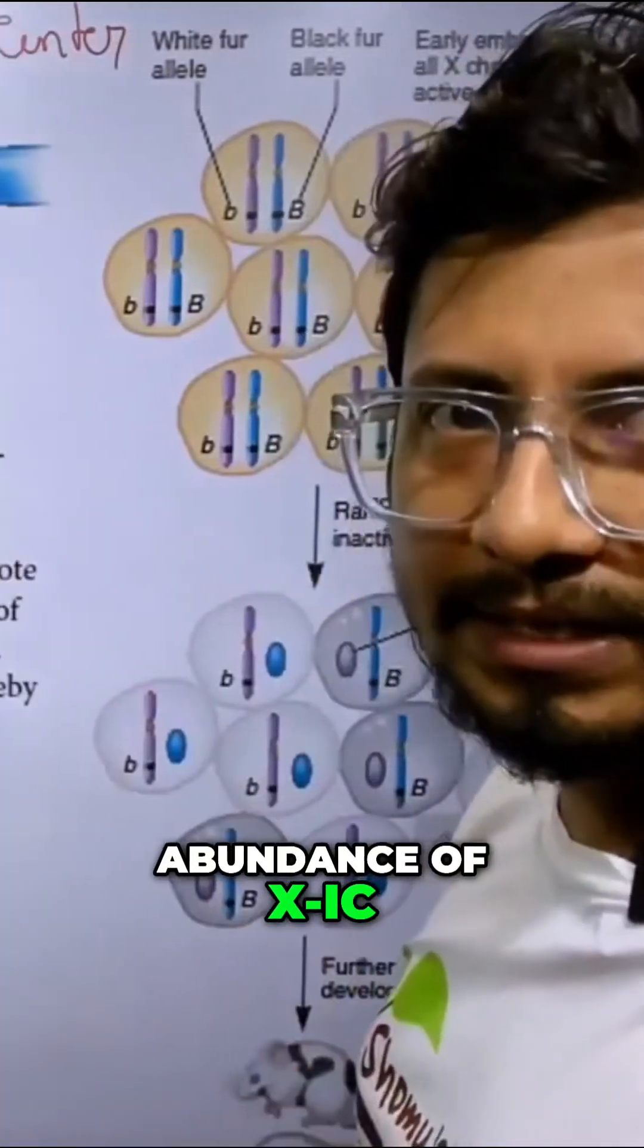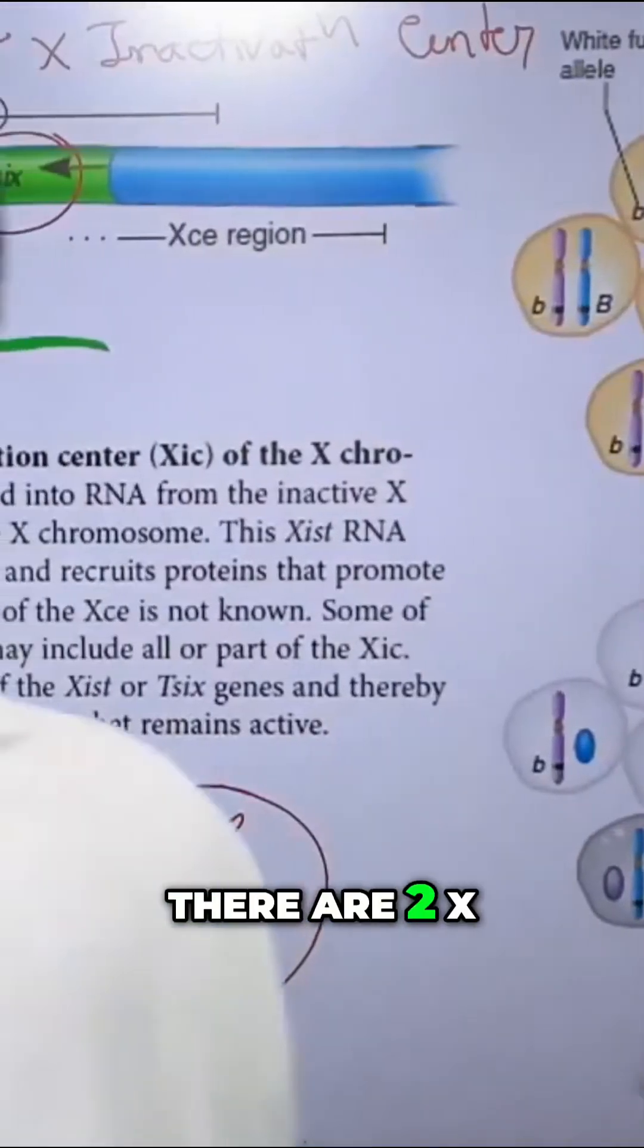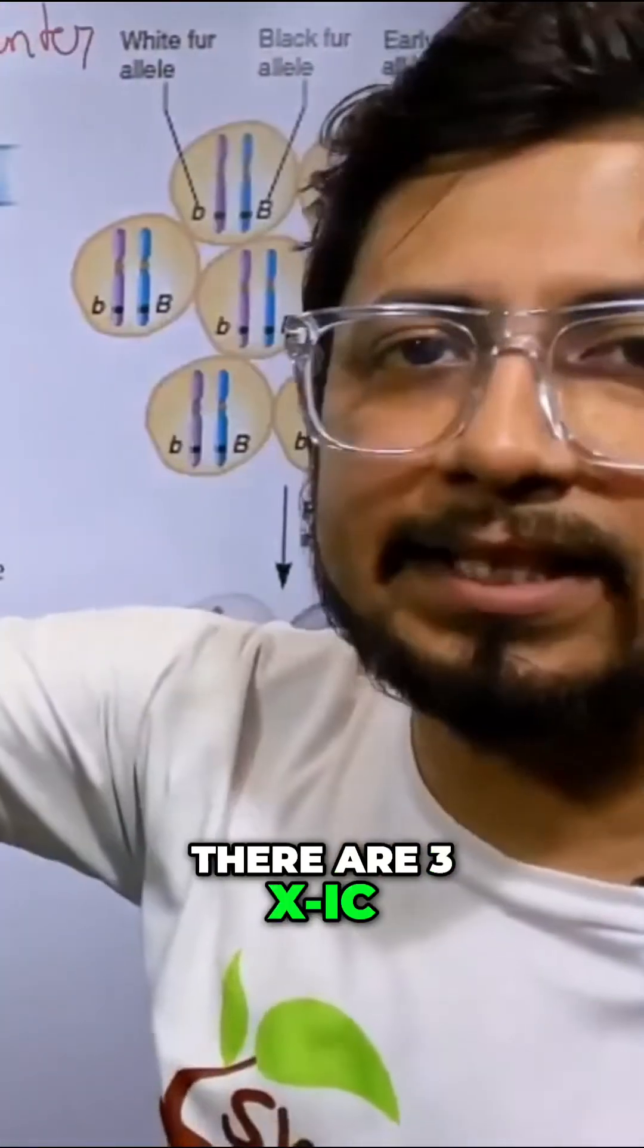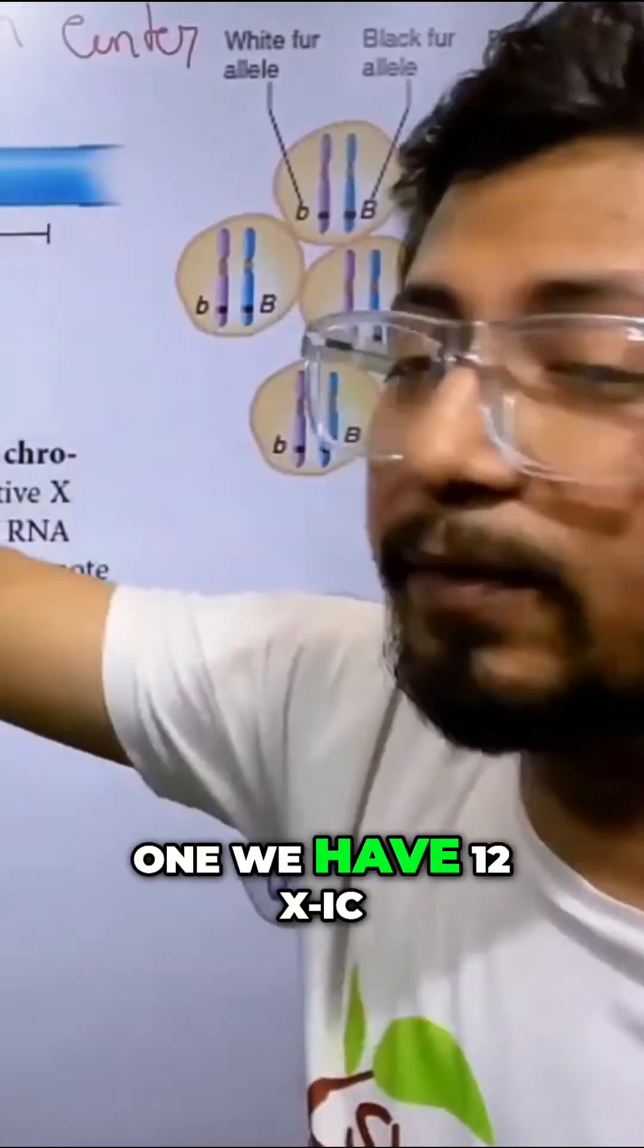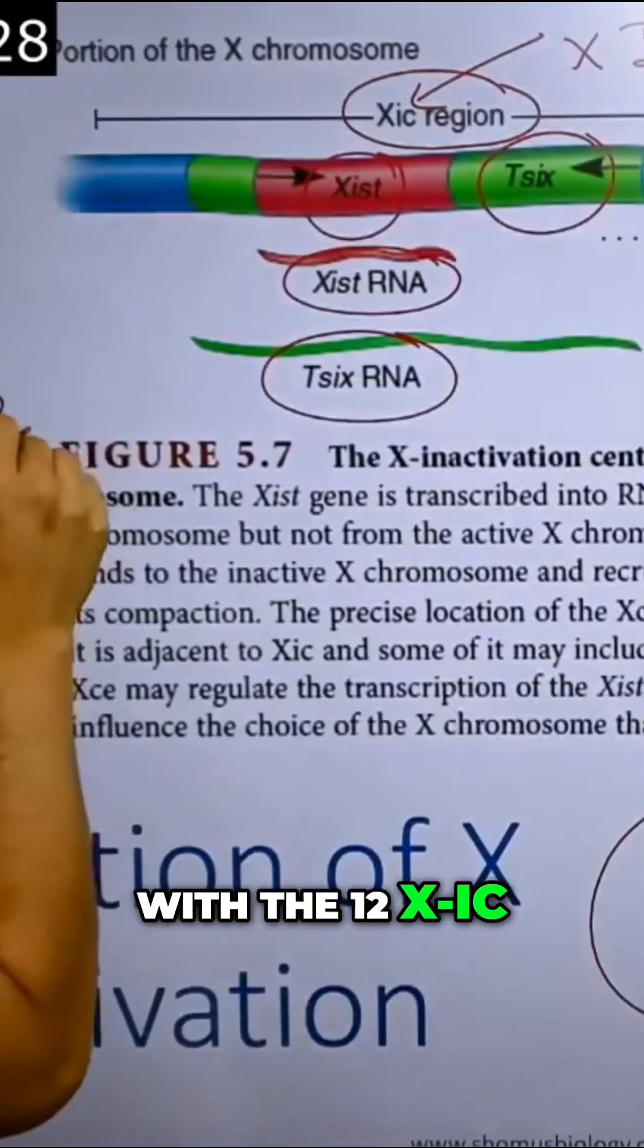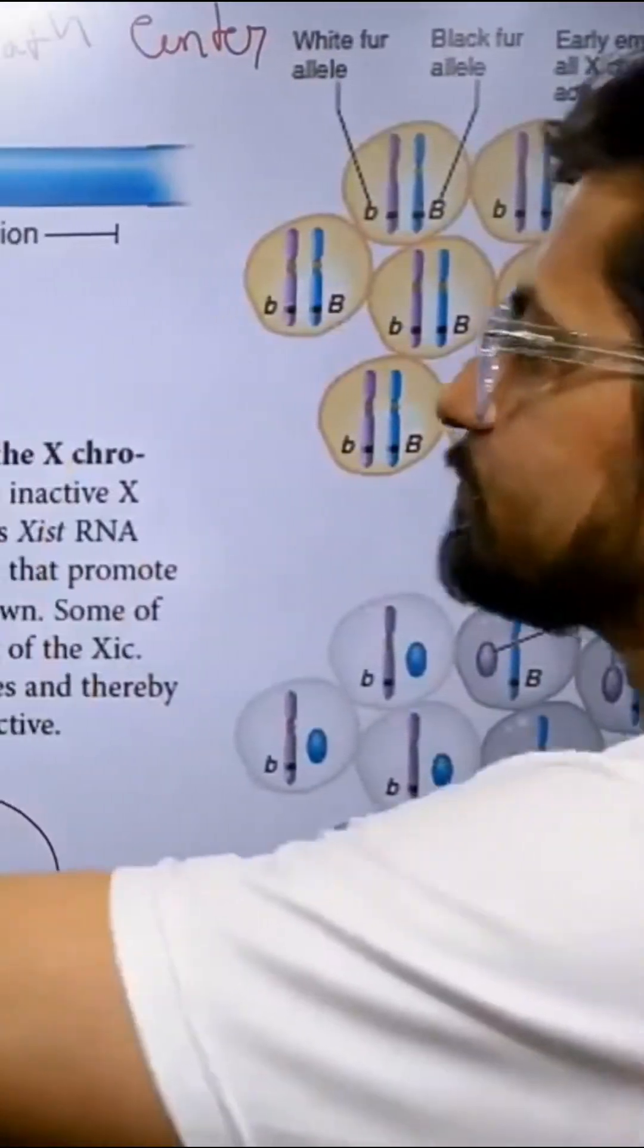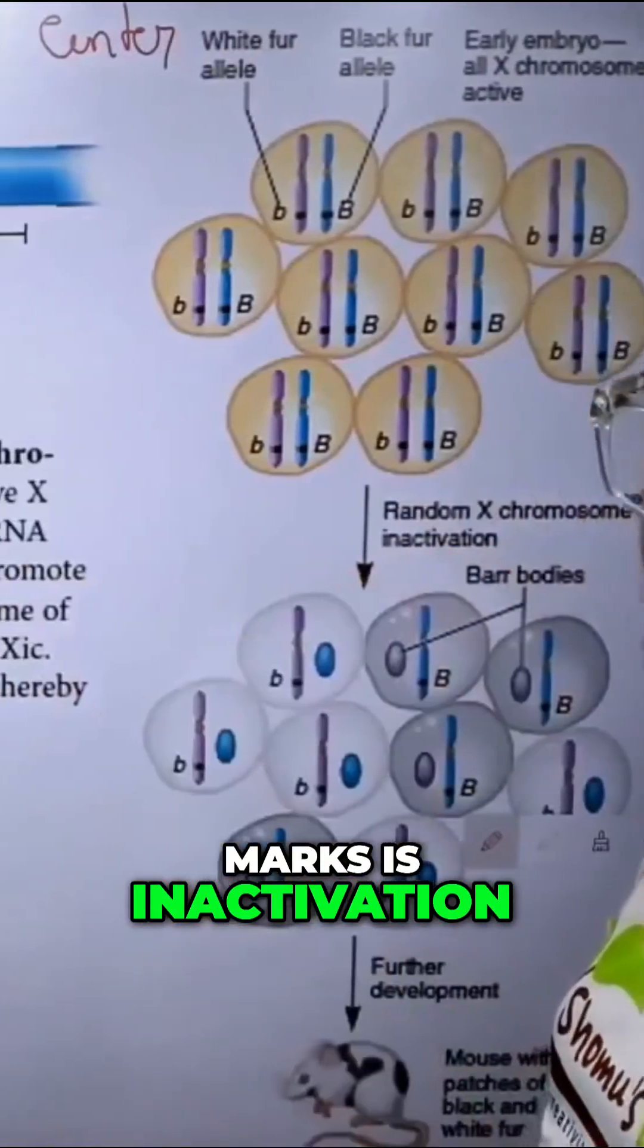Let us say between this one and two, there are two X chromosomes, X one and X two. In X one, if there are three X IC and in the second one, we have twelve X IC. So obviously, the second one with twelve X IC region has more chance to be inactivated. So the more X IC region present in the X chromosome, that X is inactivated.